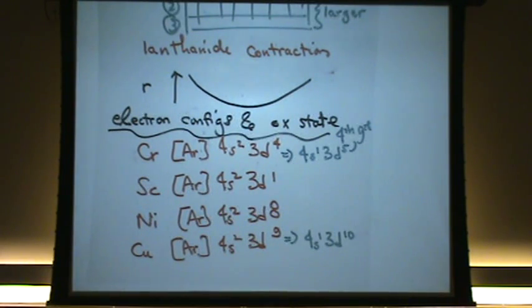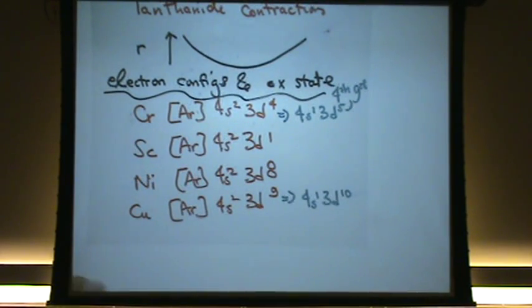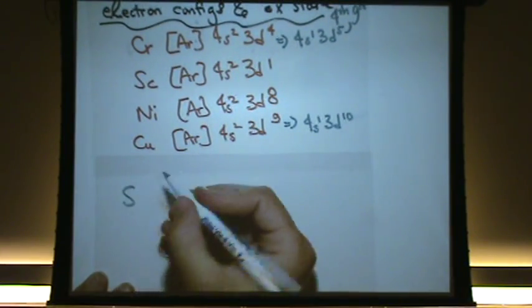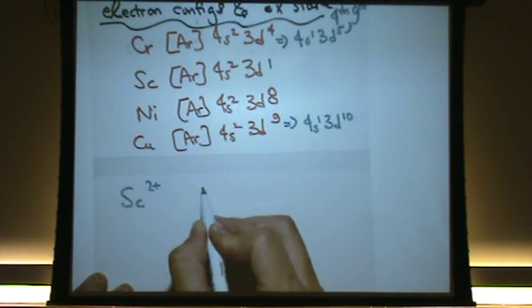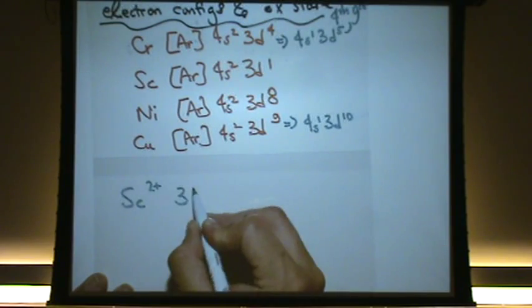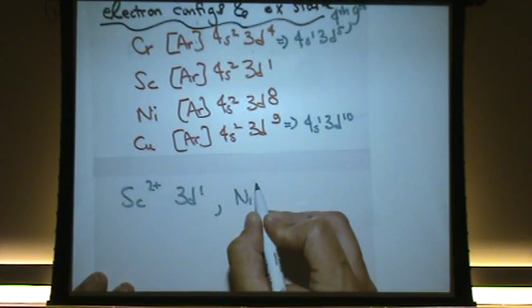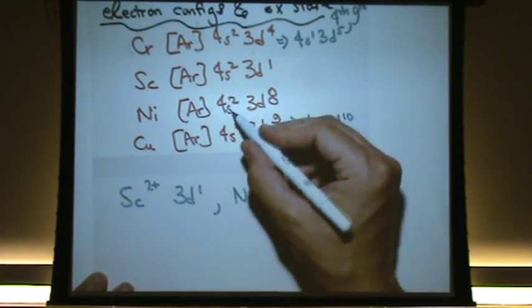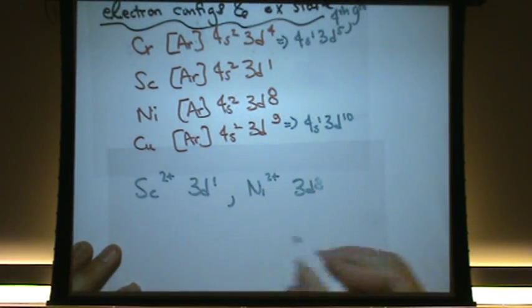The other thing is, when these start to lose electrons, then those electrons, the electrons that get lost are from the s orbitals. Let me show you what I mean. Let's do scandium 2 plus. Well that would just be 3d1. It will lose that 4s2. Or let's try nickel 2 plus. That would be 3d8. It loses the 2s electrons first. Those tend to want to come off first.